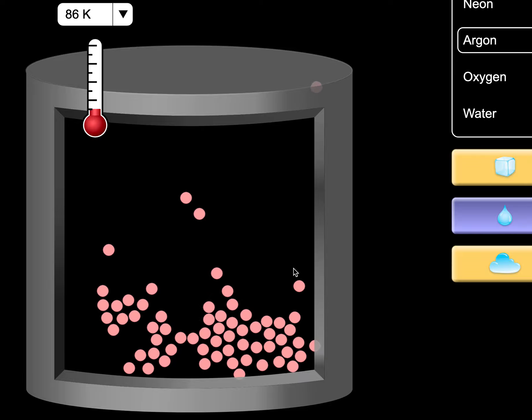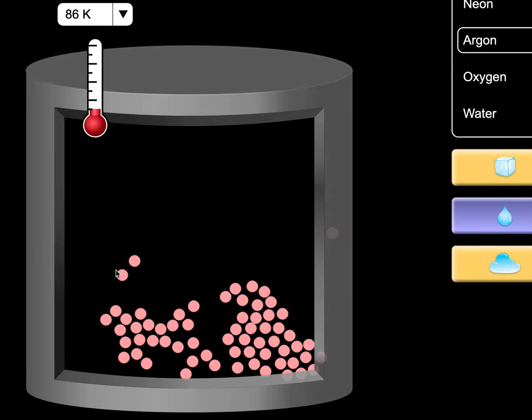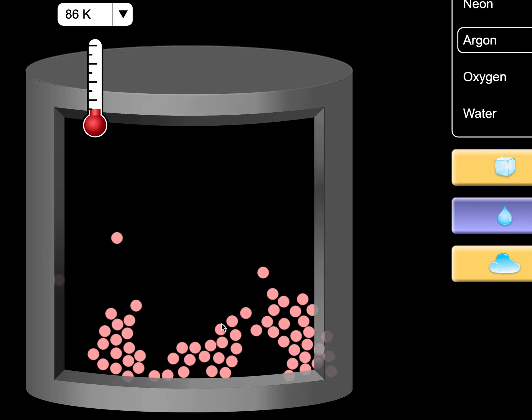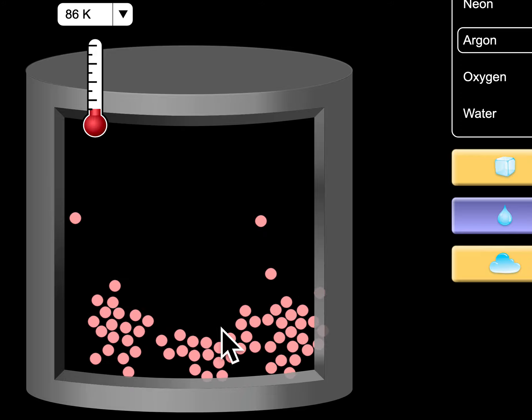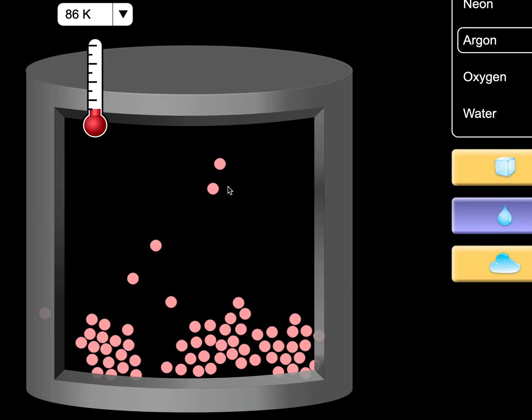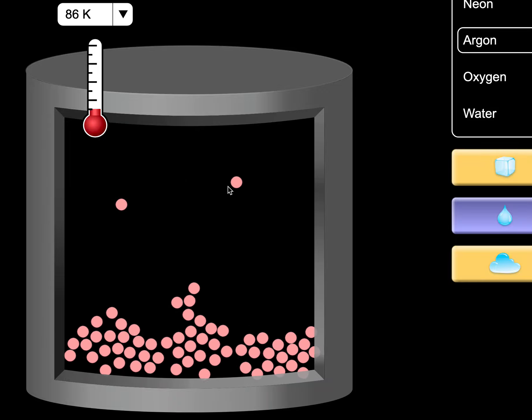There's something else really interesting going on. This is technically a liquid, but look, some of the particles have bounced out. Of course, they've evaporated. So above this liquid, we have some gas particles. And of course, those are producing a gas pressure. We call that the vapor pressure.